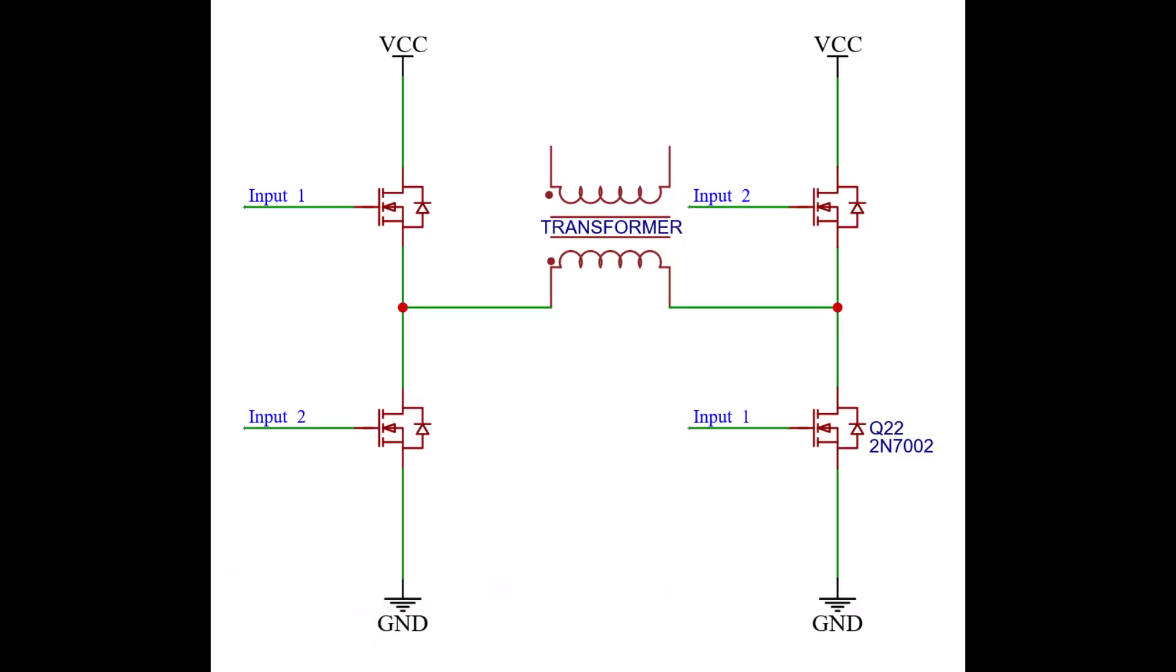An example. This is a classic H-bridge circuit. Four MOSFETs steer the direction and amount of current through a transformer.